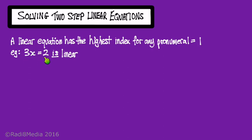So 3x equals 2 is a linear equation because this is x to the power of 1. 3x squared equals 2 however is not linear because the power or the index for any of the pronumerals, in this case x, is more than 1, and in this case it's 2.